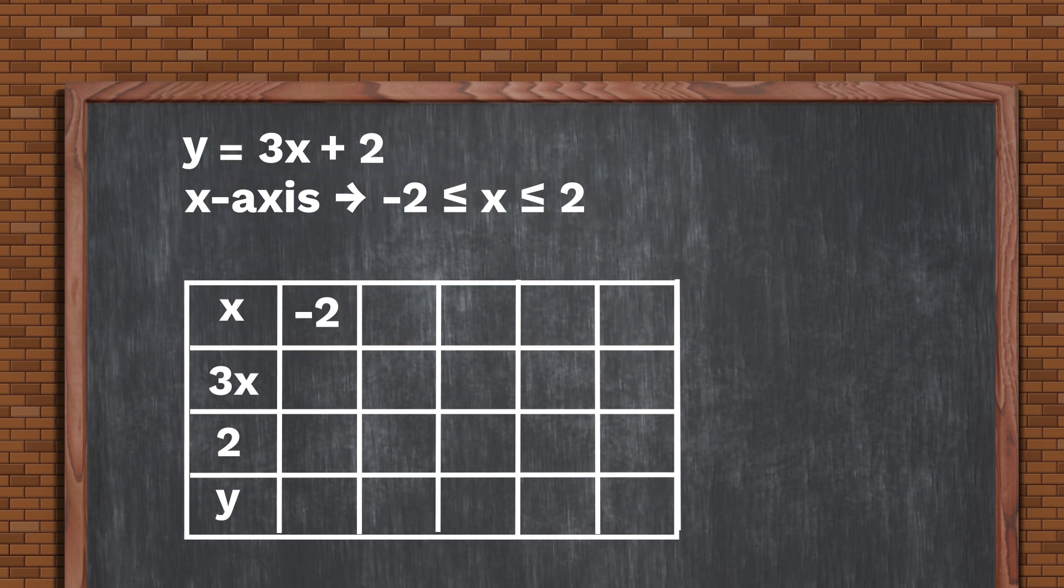This includes minus 2, minus 1, 0, 1, and 2. So our table looks like the one on your screen. Next, we fill the next row with values of 3x.